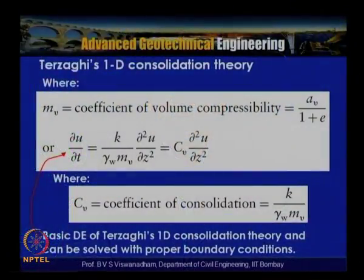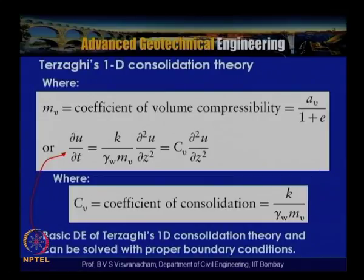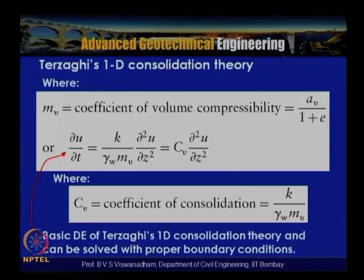The equation ∂u/∂t = cv · ∂²u/∂z² was deduced in the previous lecture. The coefficient of consolidation cv is related to permeability and coefficient of volume compressibility. Using Darcy's law: k = cv · mv · γw, where k is Darcy's permeability, mv is the coefficient of volume compressibility, and γw is the unit weight of water.